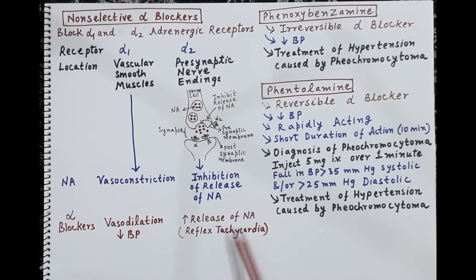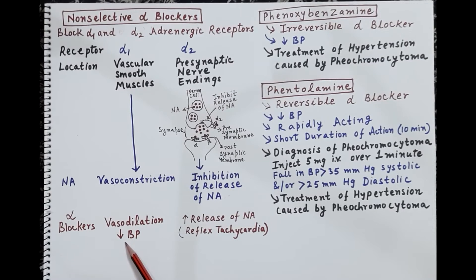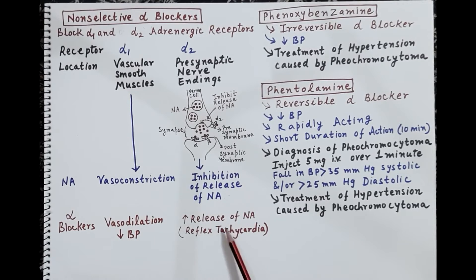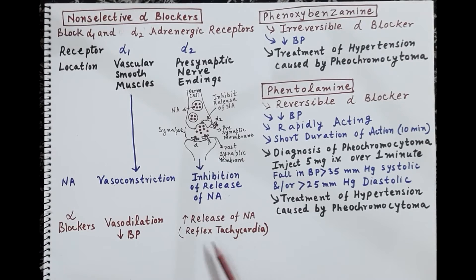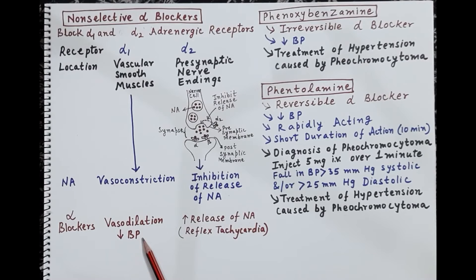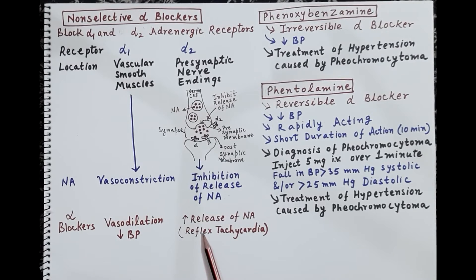Alpha blockers antagonize the alpha-2 receptor action and therefore increase the release of noradrenaline. Since there is a fall in blood pressure, the body compensates by increasing heart rate. The increased noradrenaline release raises heart rate to bring blood pressure back to normal, resulting in tachycardia. Because this tachycardia occurs as a reflex response to fallen blood pressure, it is called reflex tachycardia. These are the two main pharmacological actions of non-selective alpha blockers.